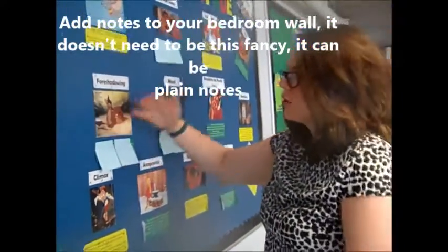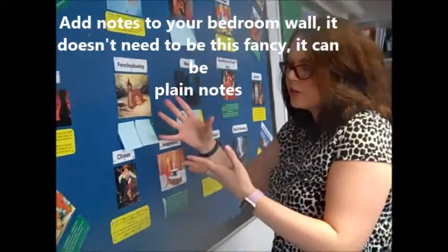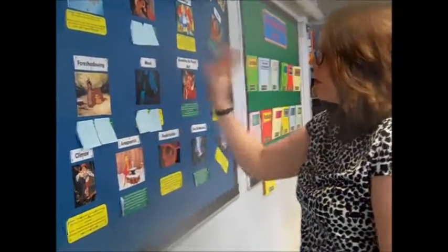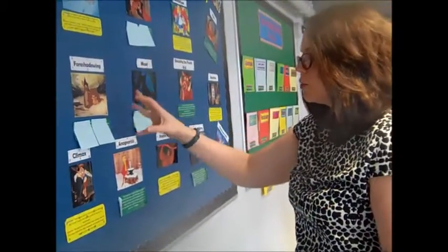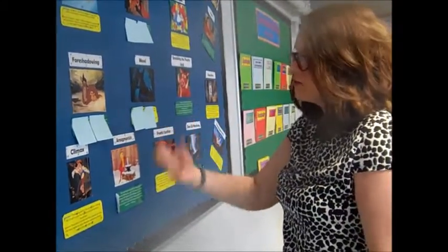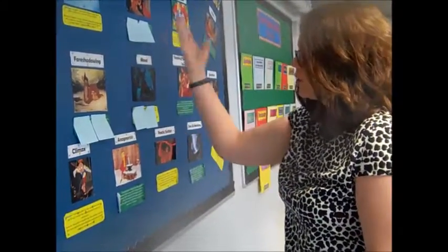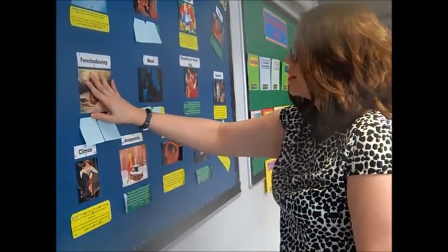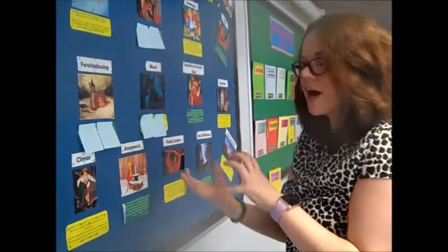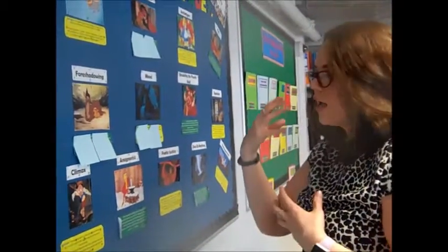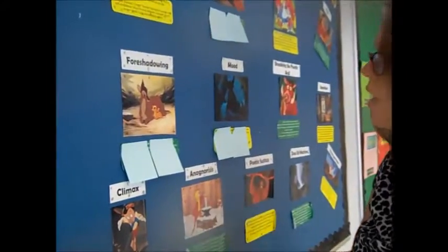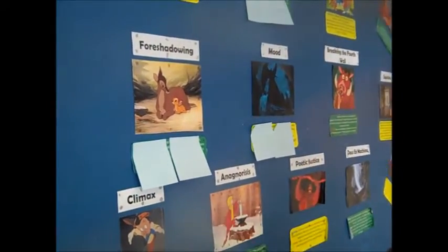I would make sure that I wrote a definition or five key terms that I needed to remember about a particular topic. I would then say to myself what that definition was — so for example, foreshadowing is all about events that happen in a poem, in a play, in a novel that indicate what's to come.